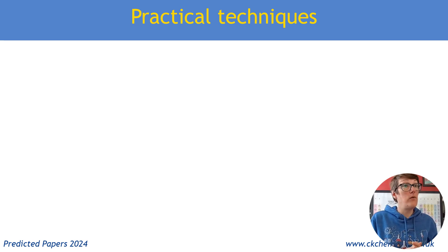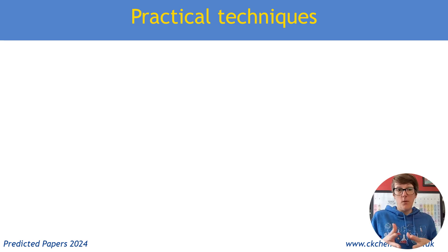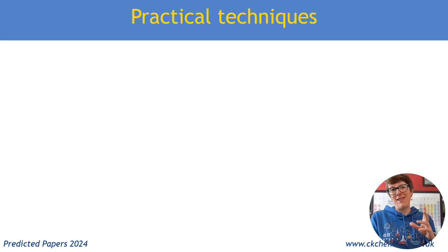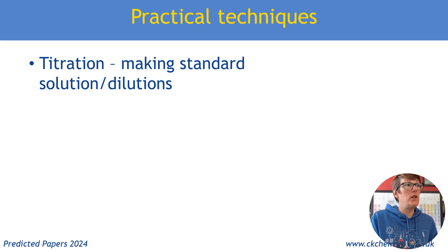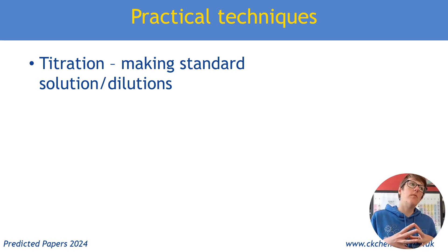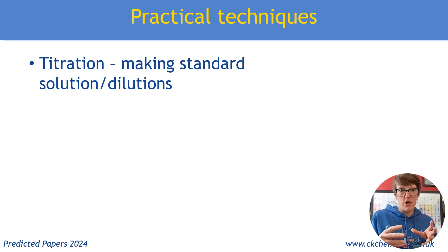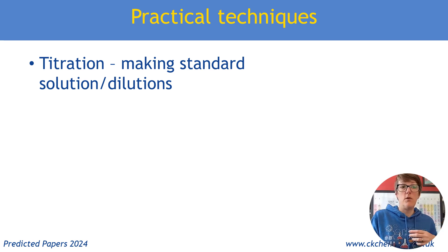I'm going to move on to some thoughts about practical techniques and experimental type questions. I get a lot of students asking what practicals might come up - again, we don't know, and I also don't know what's on Paper 2. Feel free to drop in the comments if any of these things have been in Paper 2. Titration - obviously we had titration in Paper 1, that was a redox. So that still leaves scope for acid-base titration and, in particular, making a standard solution or making up dilutions of a known concentration. Being able to make calculations about how much to add, how to use the volumetric flask, the apparatus and techniques for making those - and that could come up in the context of titrations or in rates experiments, anywhere where you need to make a solution.